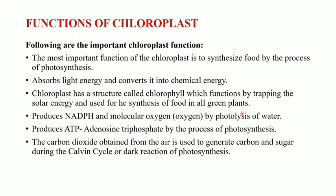Another major function is that the chloroplast produces NADPH and molecular oxygen by photolysis of water during photosynthesis. It also produces ATP (adenosine triphosphate) through photosynthesis. The carbon dioxide obtained from the air is used to generate carbon and sugar during the Calvin cycle and dark reaction of photosynthesis.